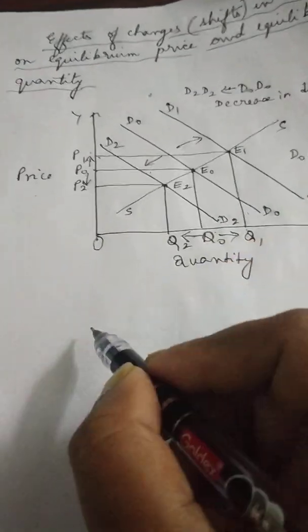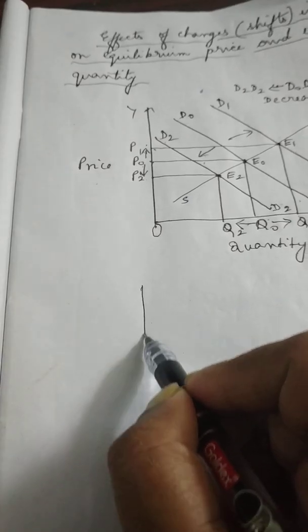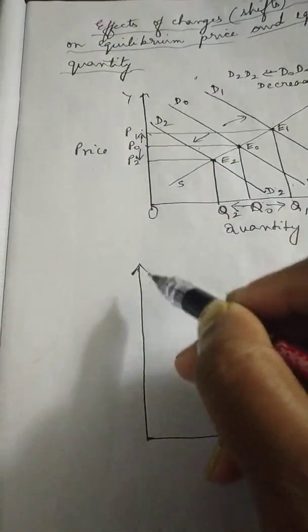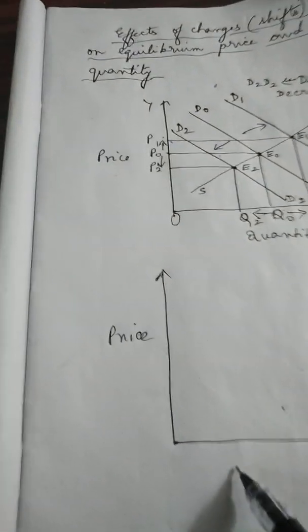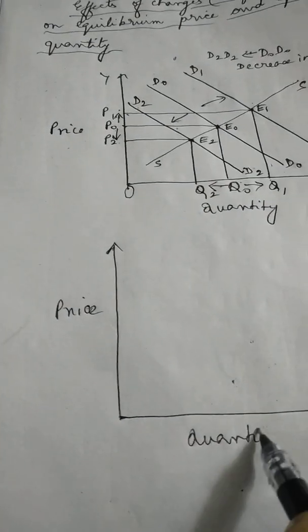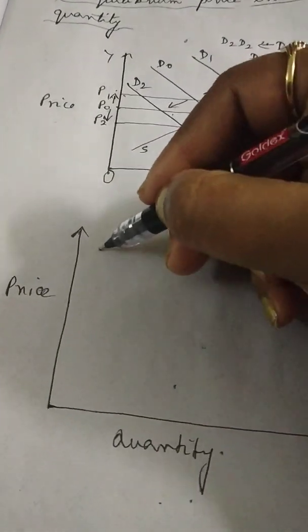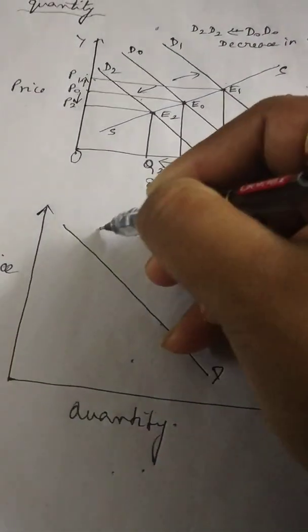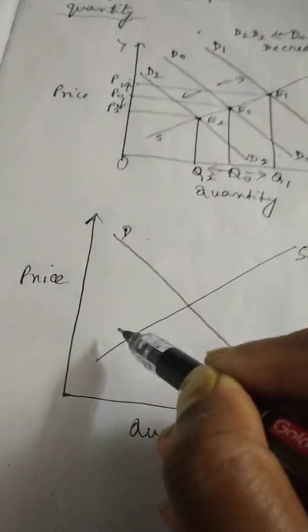Similarly, we can consider the situation when we take only supply to change but demand remains unchanged. The demand curve will remain unchanged — say DD. The initial supply curve is say S0, S0.